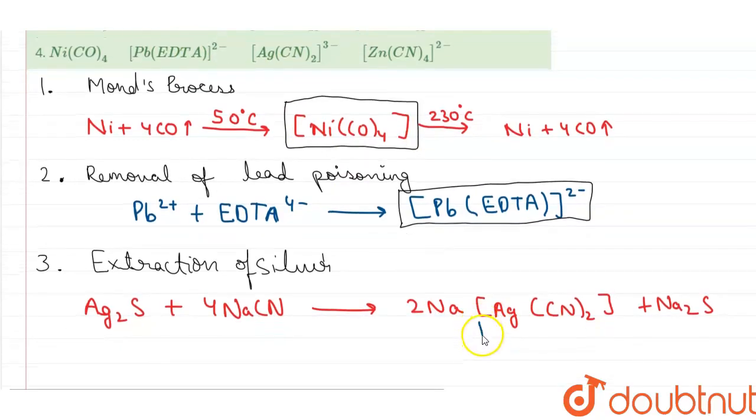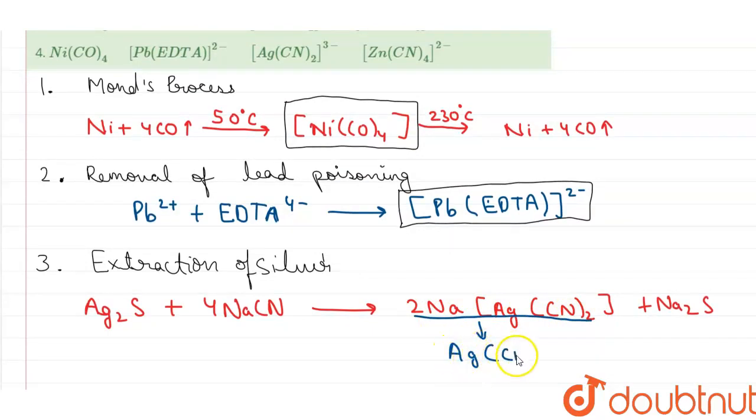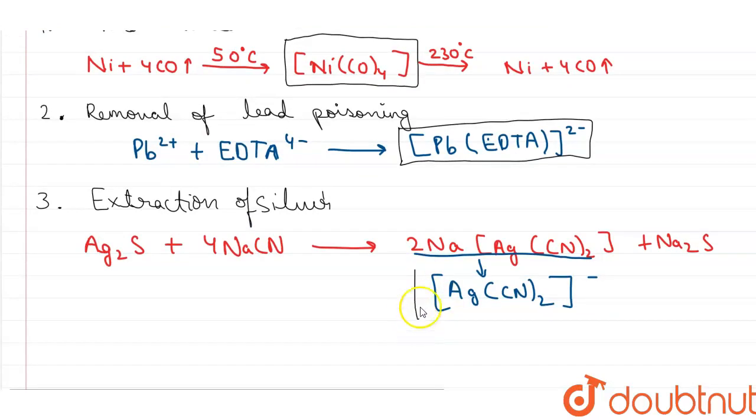From this reaction we get [Ag(CN)2]- minus. So the complex formation from the third reaction is this.